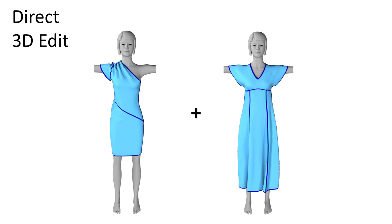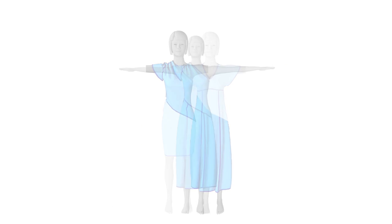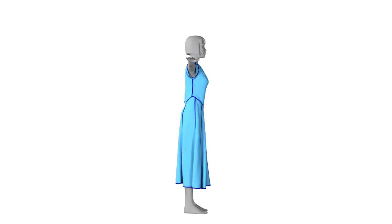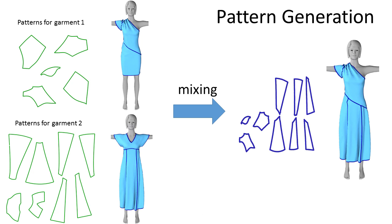We propose a new framework that allows designers to directly apply the changes they envision in 3D space. We then automatically compute 2D patterns that recreate this target garment shape when draped around the input mannequin using physical simulation.